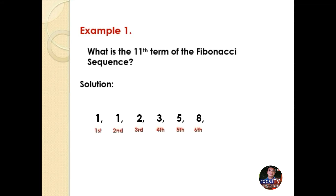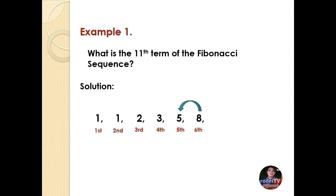The 7th term is 8 plus 5 so we have 13. To get the 8th term we add 13 plus 8 so we have 21. The 9th term is 21 plus 13 so we have 34. To get the 10th term we add 34 plus 21 so we have 55. Lastly, to get the 11th term we add 55 plus 34 so we have 89. Therefore the 11th term of the sequence is 89. Pretty easy right?